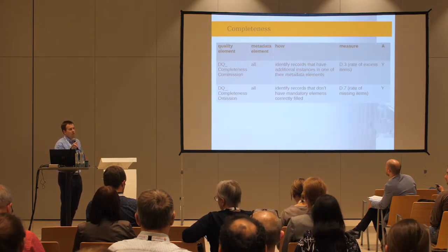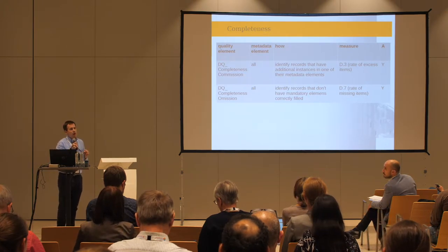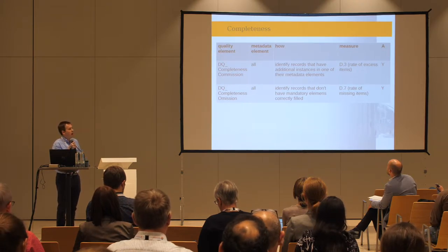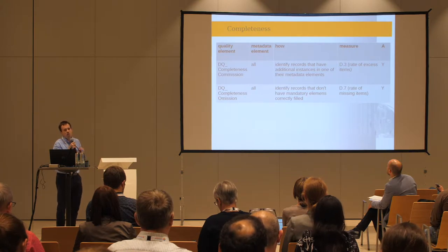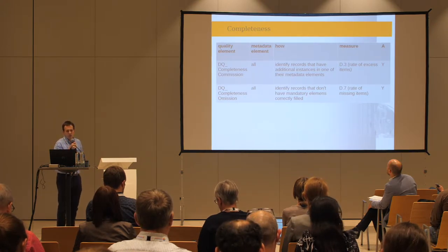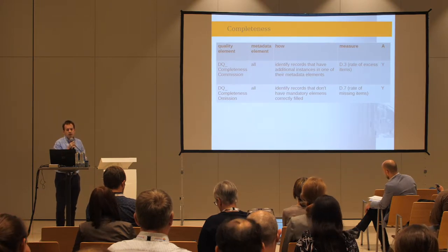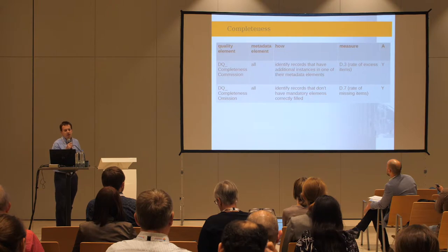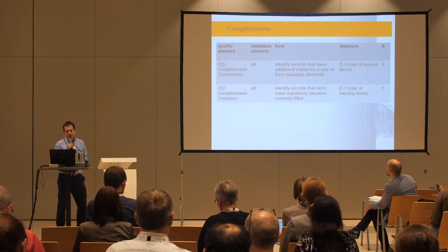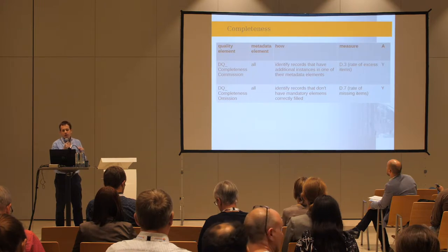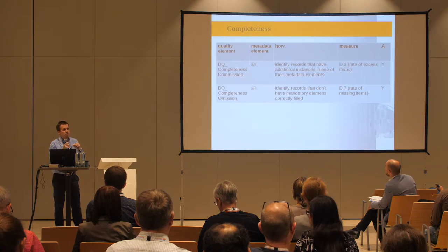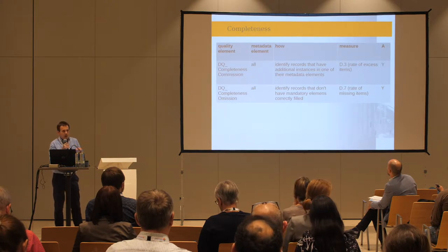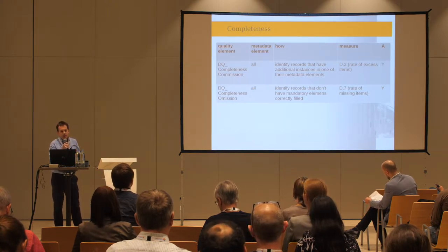Here I explain how we implemented the quality elements with some controls and measures, applied to representative metadata elements. With respect to completeness commission, we identify records that have additional instances in one of their metadata elements. What we measure corresponds to measure D.3 in ISO 19157 — the rate of excess items. For omission, we identify records that don't have mandatory elements correctly filled.